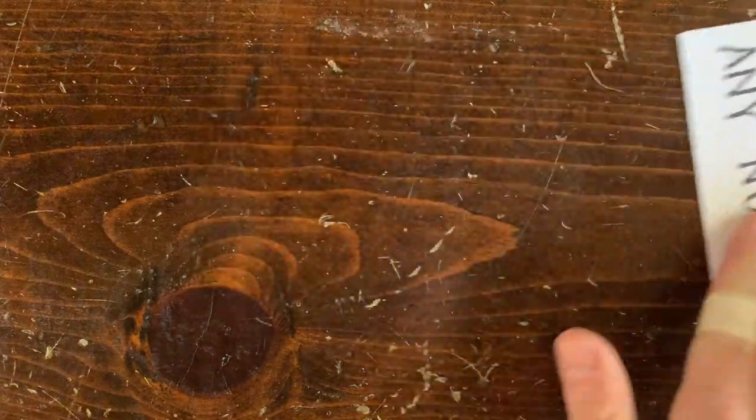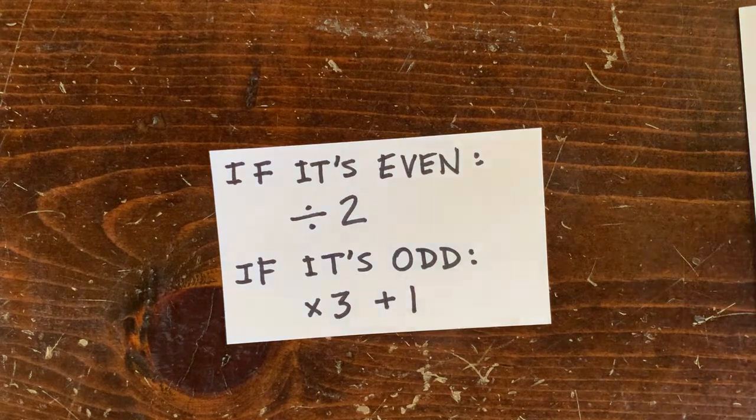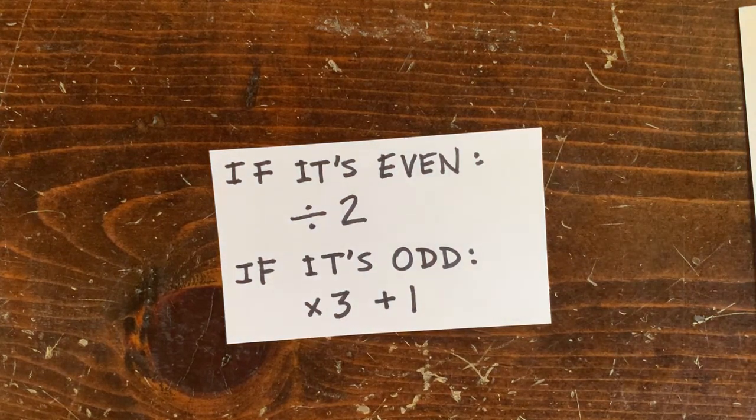Okay, the 3n plus 1 conjecture says start with any number. If it's even, cut it in half. If it's odd, multiply it by 3 and add 1. Then repeat.